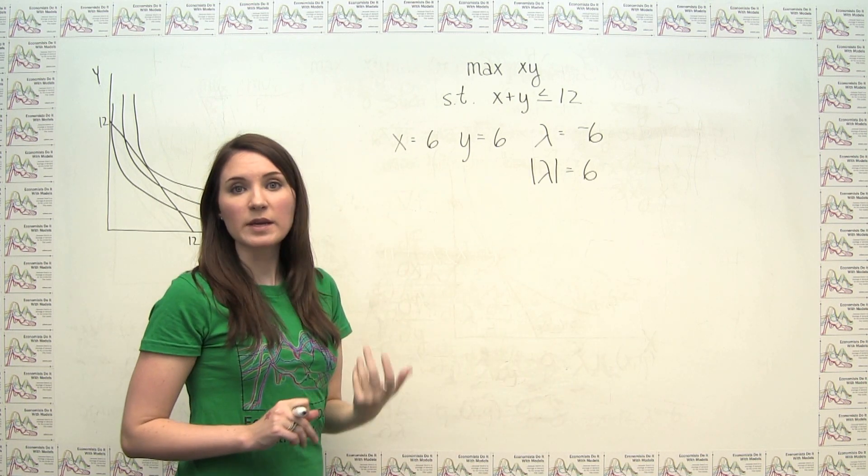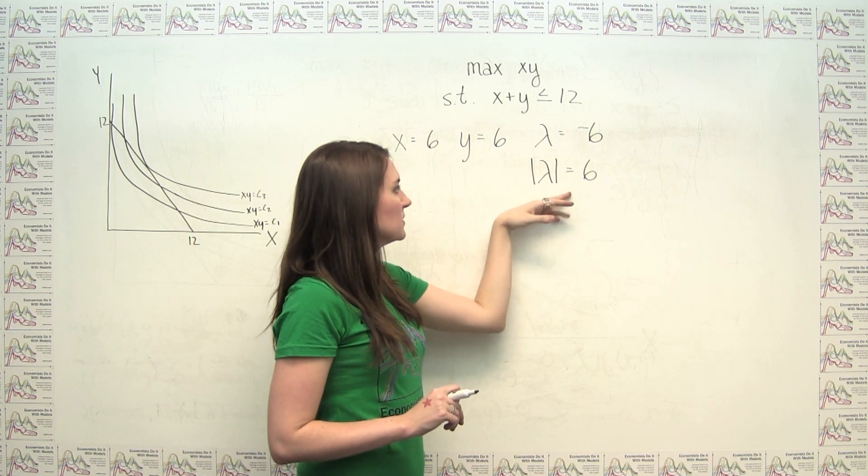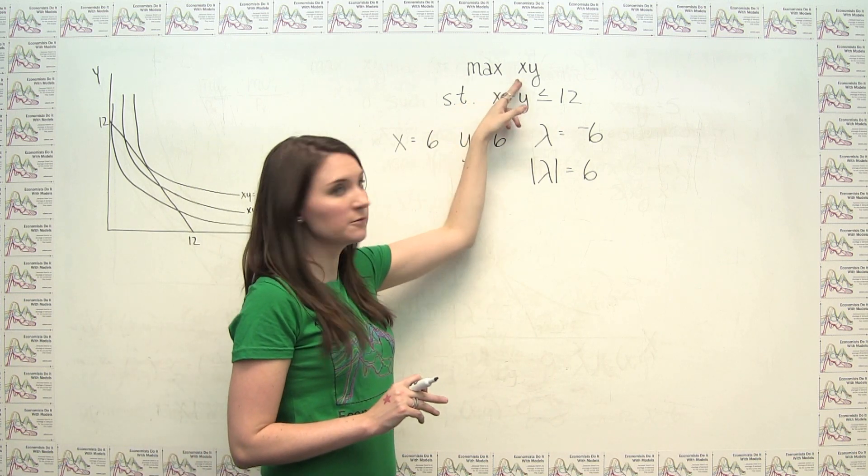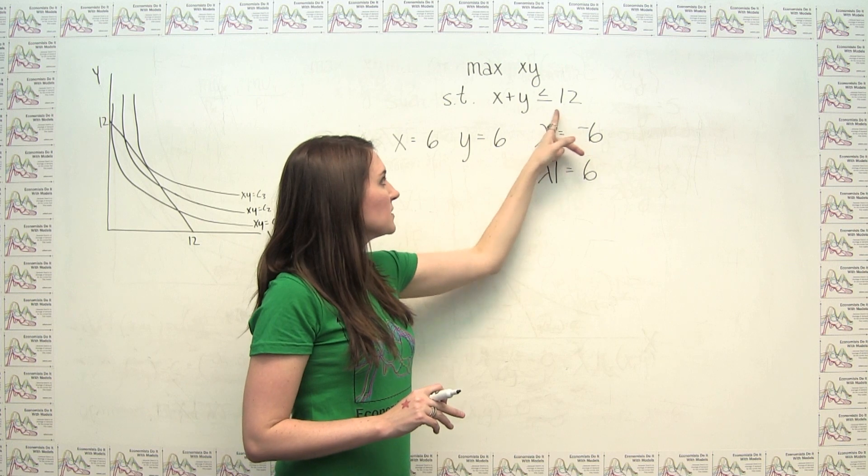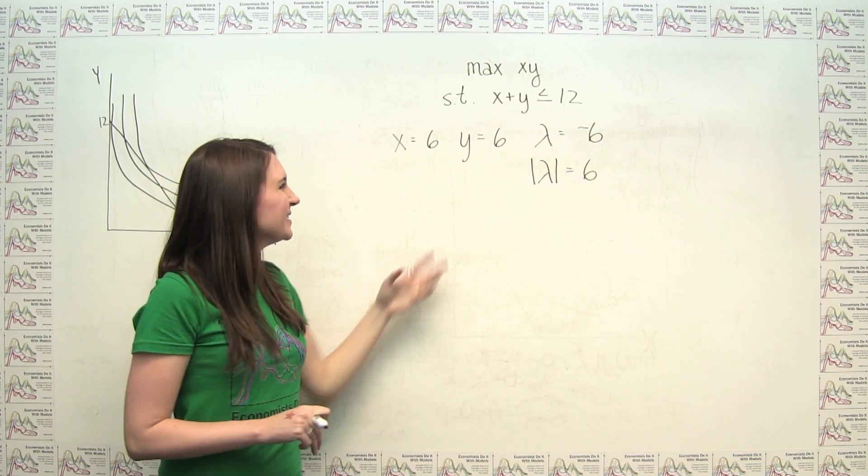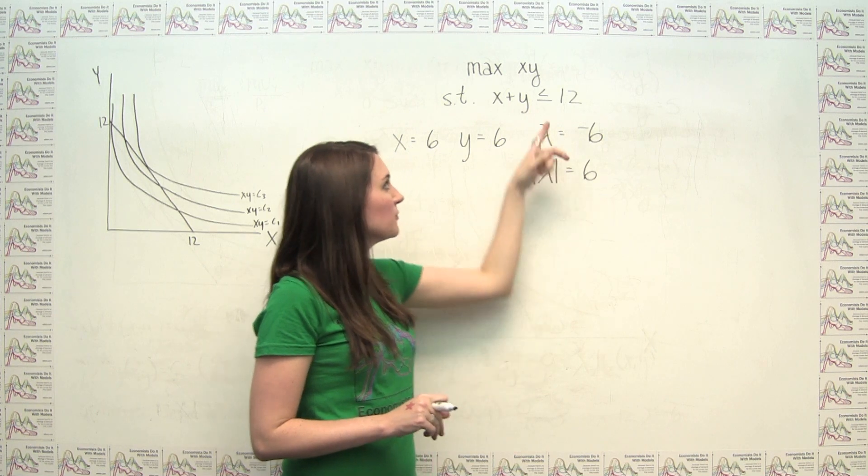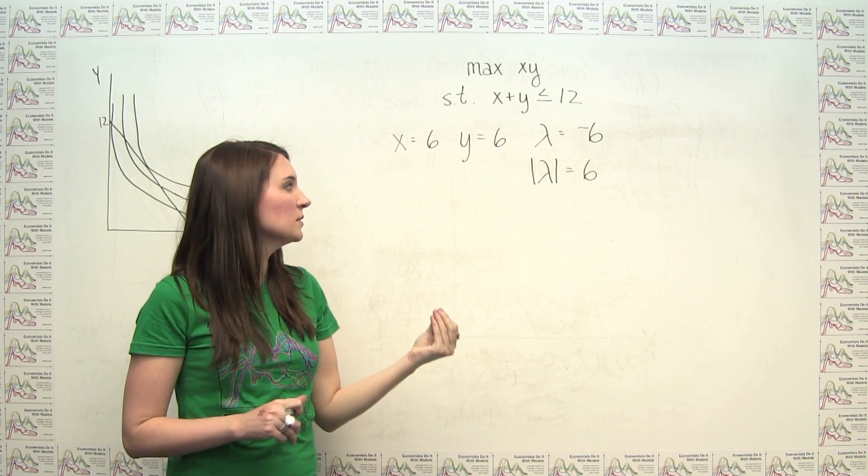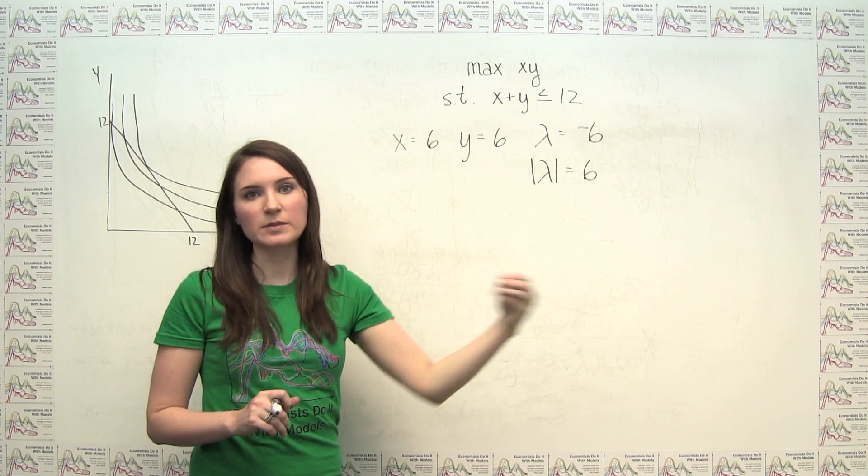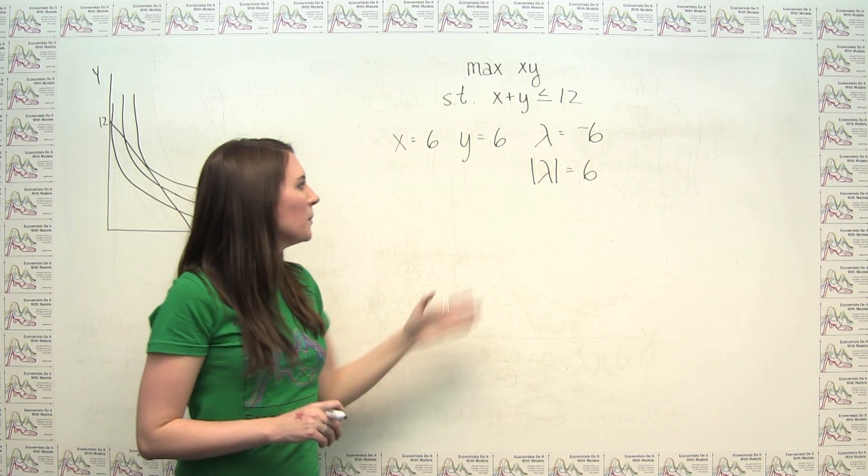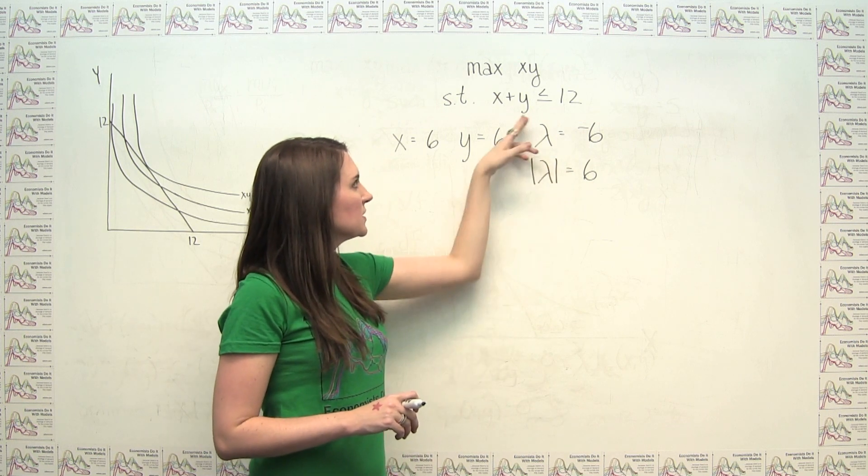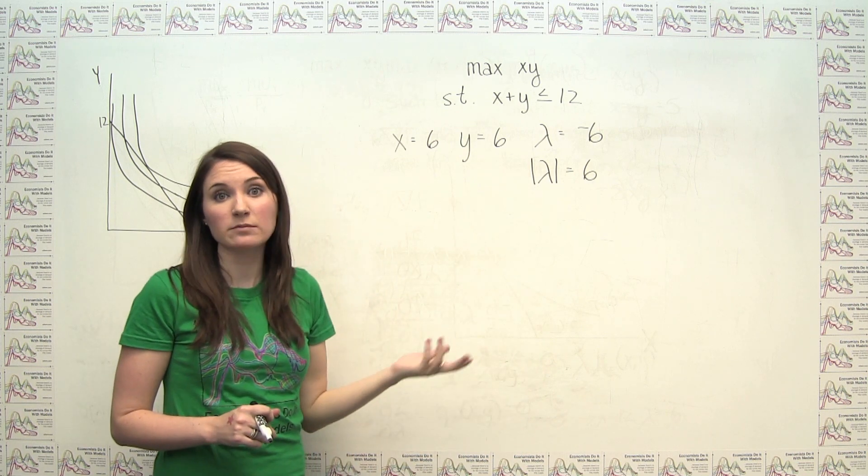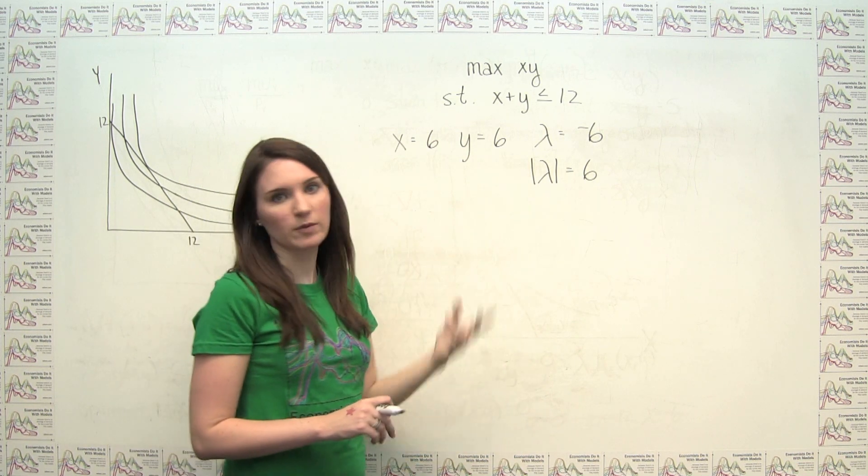And to an approximation, we can say that this lambda or this shadow price represents the additional value we could get in our objective function if we relaxed our constraint by one unit. Technically speaking, what we should be saying is if we relaxed our constraint by some infinitesimally small amount, we would get an increase in our objective function of 6 times that infinitesimally small amount. But to an approximation, we can say if we increase the value of this side of our constraint by one, we could increase the value of our objective function by 6. And that should be okay for most purposes.